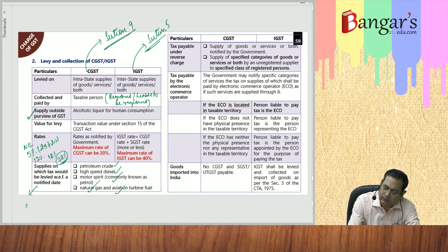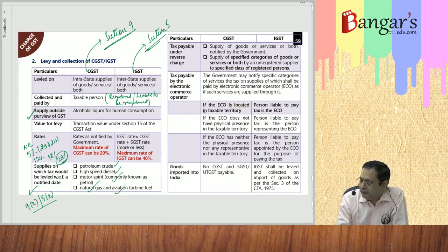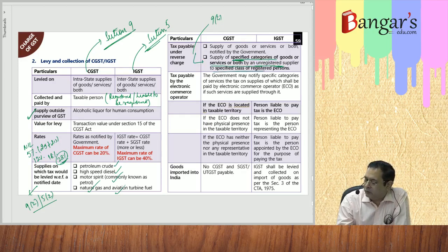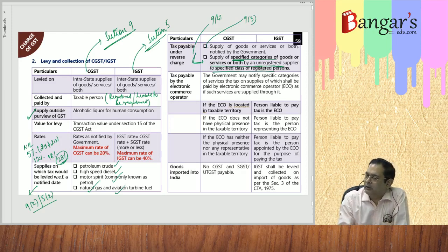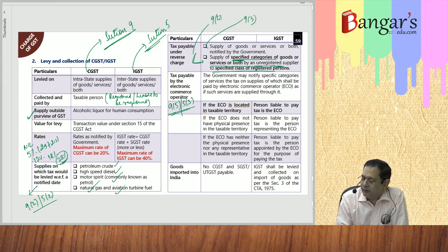As per Section 9(3) and 9(4), and 5(3) and 5(4), supply of goods and services notified by the government attract reverse charge mechanism. Under Section 9(4), supply of a specified category of goods or services from an unregistered supplier to a specified class of registered persons triggers reverse charge. Under Section 9(3), reverse charge mechanism applies where the recipient of goods or services is liable to pay GST. Under Section 9(5), the government may notify specified categories of services where tax shall be paid by the electronic commerce operator if such services are supplied through its platform.